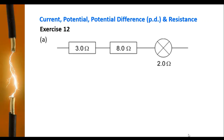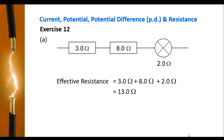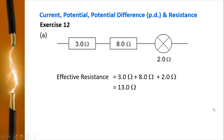In exercise trial, we have a 3.0 ohm resistor connected in series with a 8.0 ohm resistor and a 2.0 ohm bar. The effective resistance of these three components connected together will be equal to the sum of their resistances, which yields 13.0 ohm.